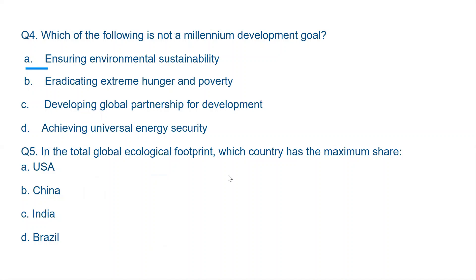Question number four: Which of the following is NOT a Millennium Development Goal? The United Nations adopted Millennium Development Goals for sustainable development in this millennium. The options are: A. Ensuring environmental sustainability; B. Eradicating extreme hunger and poverty; C. Developing global partnership for development; D. Achieving universal energy security. The correct answer is D — achieving universal energy security is not a Millennium Development Goal.